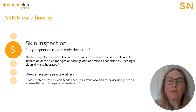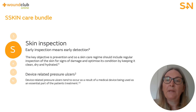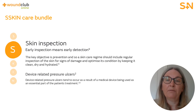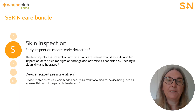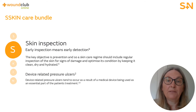Skin inspection: regularly inspecting a patient's skin to identify skin abnormalities is a key practice in pressure ulcer prevention. The key objective is prevention, and a skin care regime should include regular inspection of the skin for signs of damage. The patient's skin should be examined systematically from head to toe. Although pressure ulcers most commonly occur over bony prominences, they can also be found under medical devices such as masks or catheters.